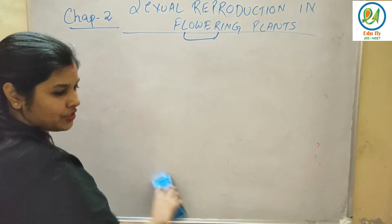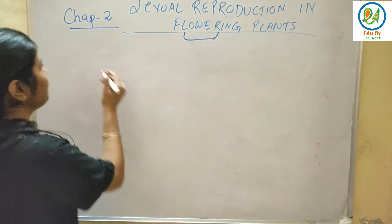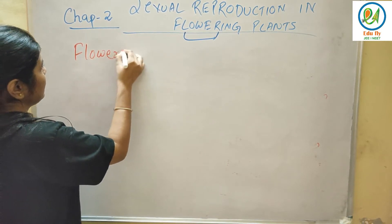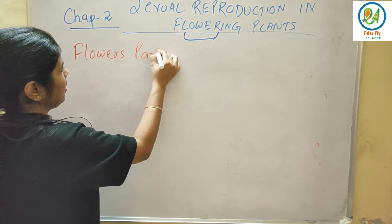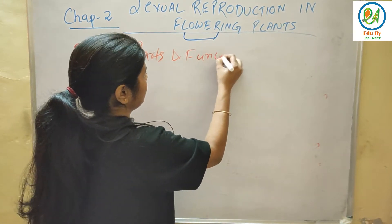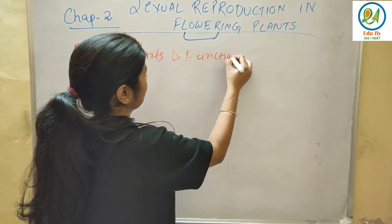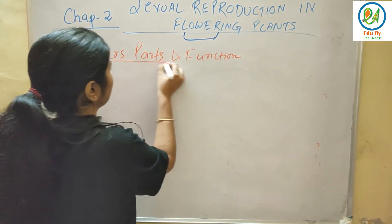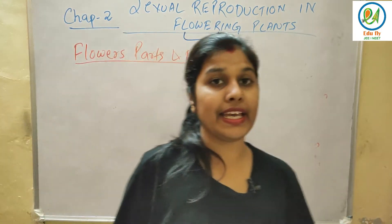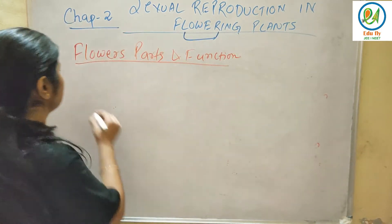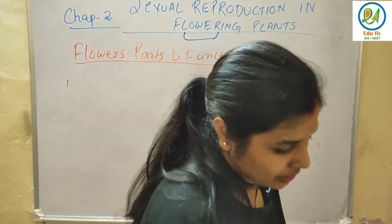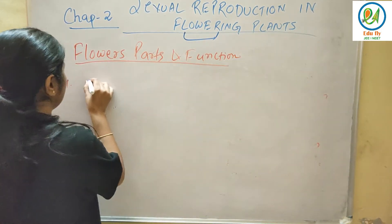My topic is flower parts and their functions. So, first of all, the first part is calyx. Calyx is commonly known as sepals.